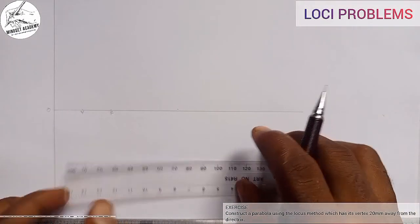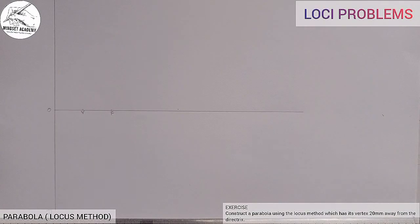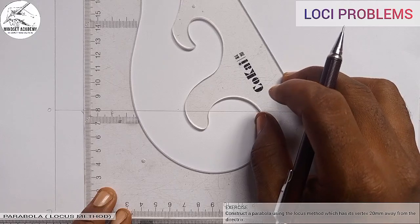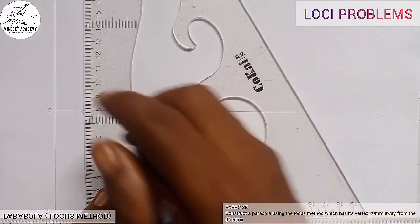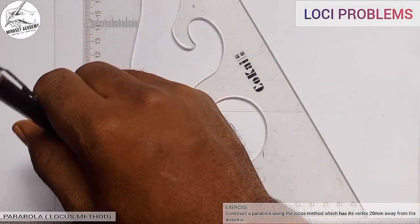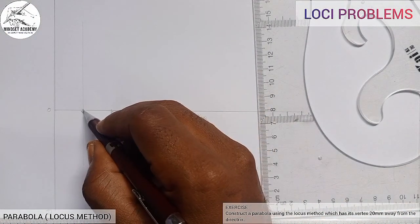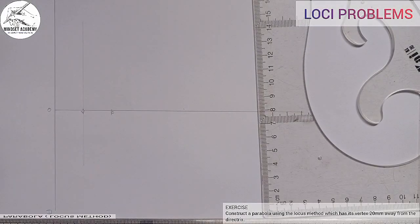Now the next thing I am going to do is draw a vertical line through my point V, that is my vertex. This way. You can see that, the vertical line through my point V at my vertex.